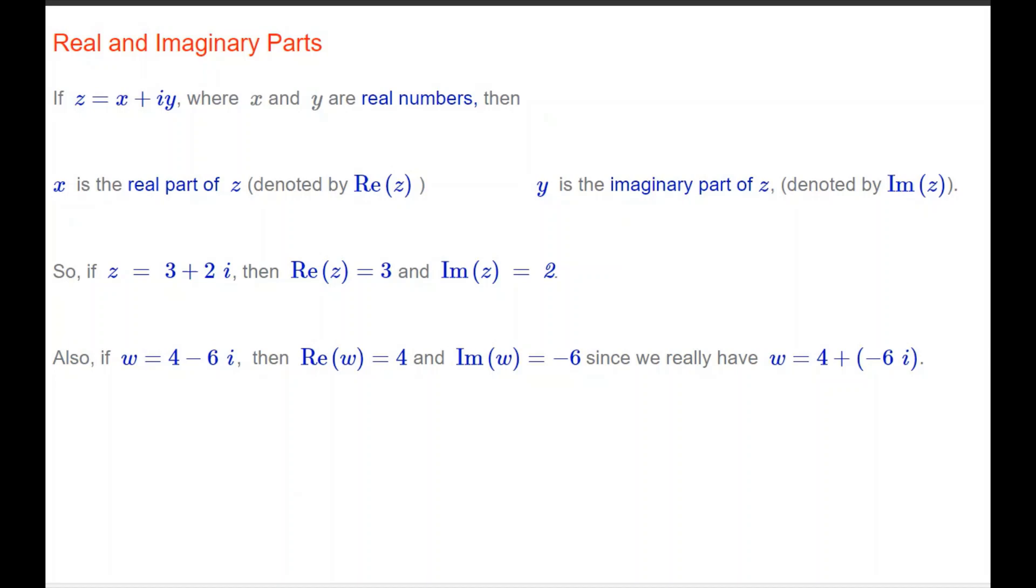Also, if w is 4 minus 6i, then the real part of w is 4, and the imaginary part of w is minus 6, since we really have w equals 4 plus minus 6i.